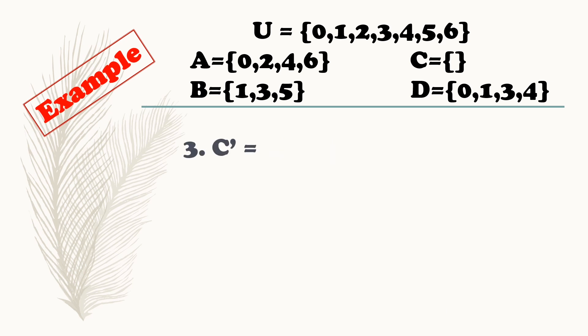Complement of set C. Set C is an empty set. Meron bang elements na wala sa set C na nasa universal set? Lahat wala. So list all the elements of the universal set: 0, 1, 2, 3, 4, 5, 6. That is the complement of set C.